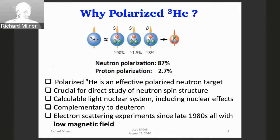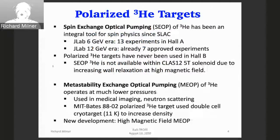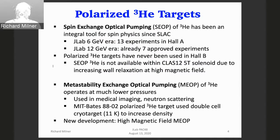Most importantly, all the experiments over the last 30 years have been done with targets at low magnetic field. At Jefferson Lab there's been a very successful spin exchange optical pumping program, with lots of experiments done, approved, and planned. However, polarized helium-3 targets have never been used in Hall B, and this technology is generally not available for use in a high field due to technical reasons.